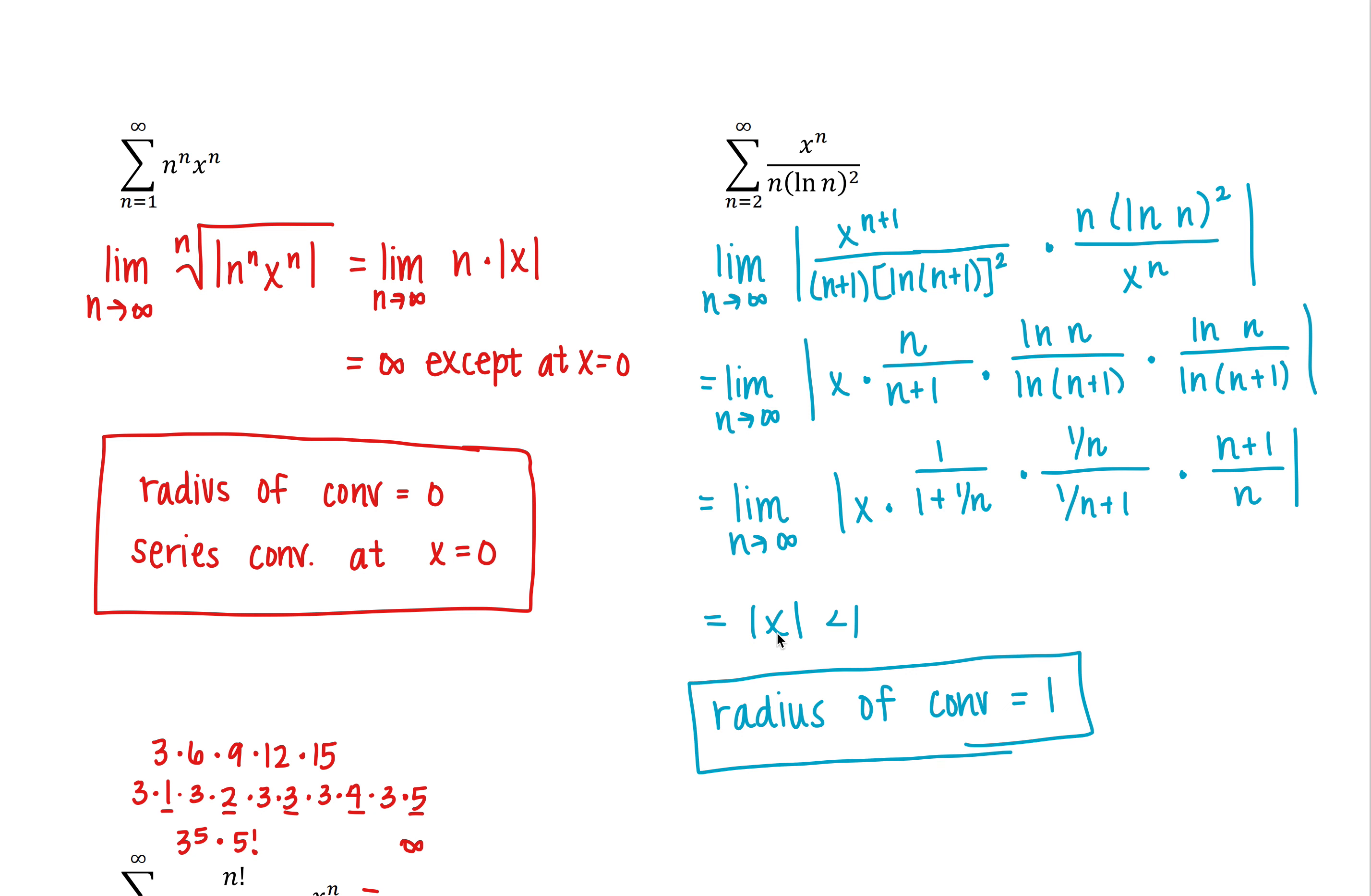Now knowing that the absolute value of x has to be less than 1, we know that we have an open interval from negative 1 to positive 1, for which all x values inside that open interval is going to cause the series to converge absolutely.